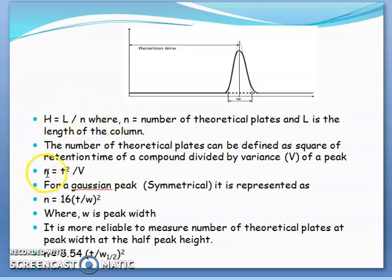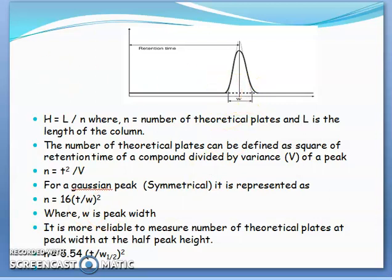The number of theoretical plates N can be determined as t² divided by variance, or for a symmetrical peak N = 16·(t/w)², where t is the retention time and w is the peak width. Many times, instead of peak width, the width at half peak height can be used to calculate N, and the equation is N = 5.54·(t/w½)², where w½ is the peak width at half height.